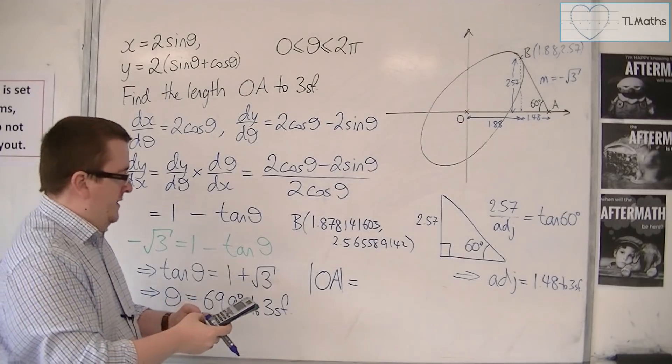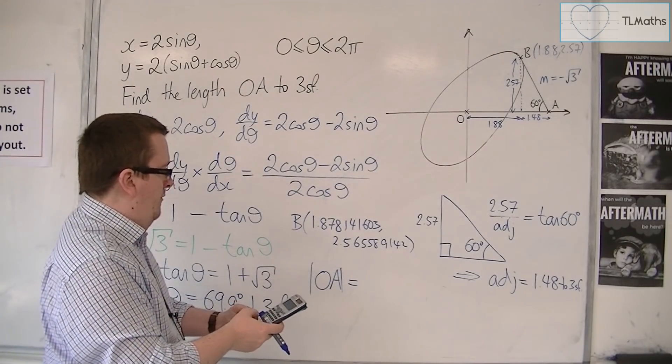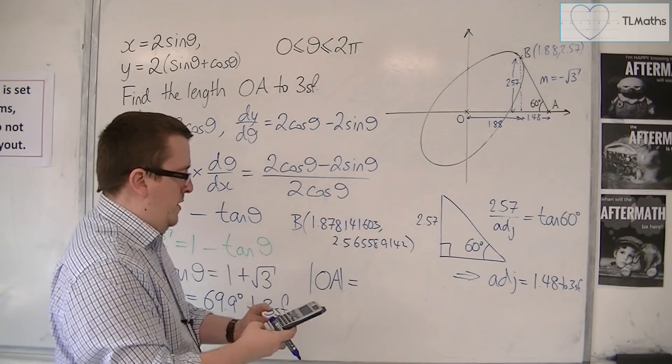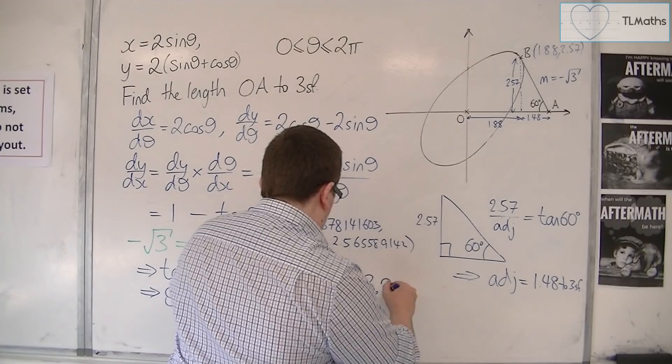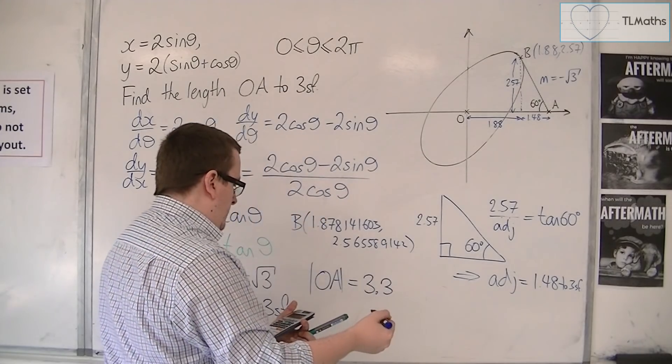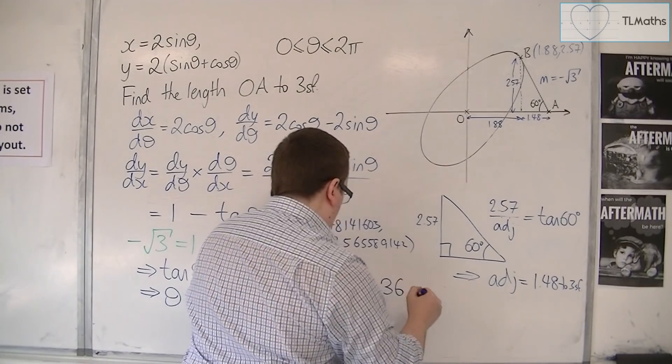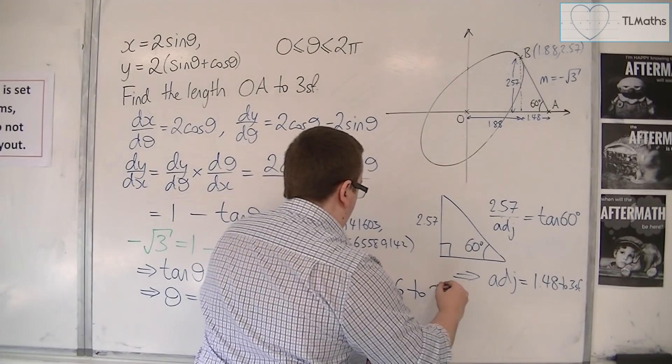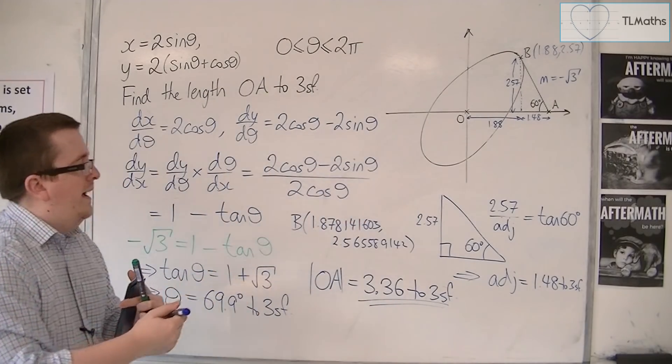I can then add the 1.48 onto the 1.88 to get the length of OA. Add that to 1.878141603, and we get 3.359, so 3.36 to 3 significant figures. That is the answer.